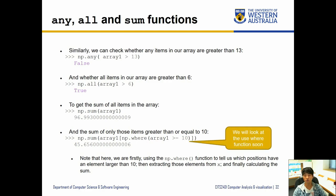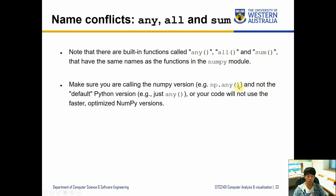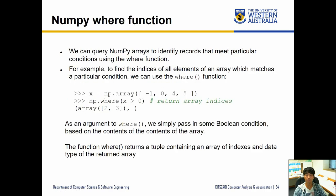There could be name conflicts between built-in Python functions and NumPy functions. Functions like any, all, and sum exist in both Python and NumPy. Make sure you call np.any, np.all, and np.sum to ensure you're using the NumPy versions, which may behave differently from the Python built-ins.